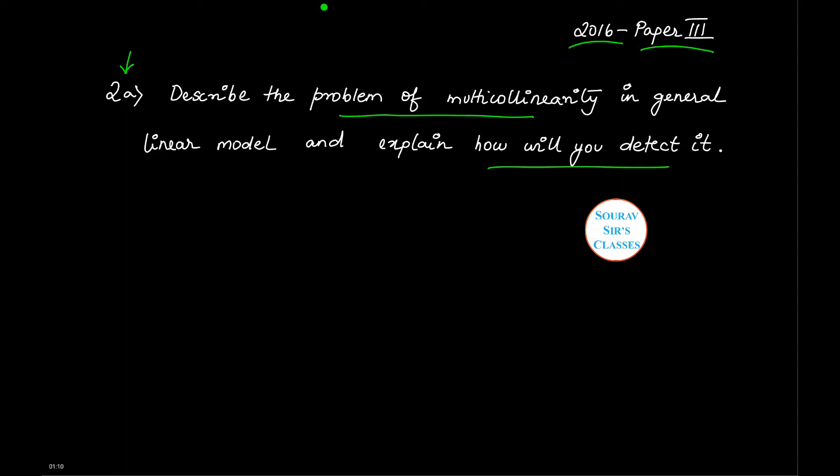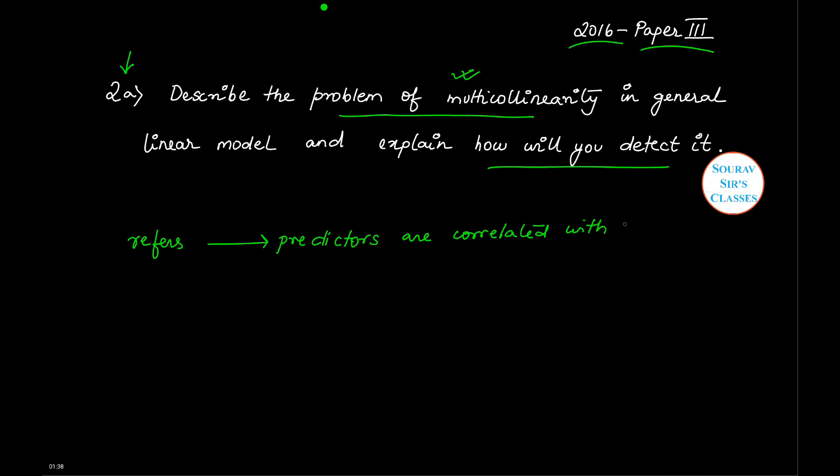So first, let us discuss what do we understand by multicollinearity. Multicollinearity refers to a situation where predictors of the model are correlated with other predictors in the model. Then the problem of multicollinearity arises.